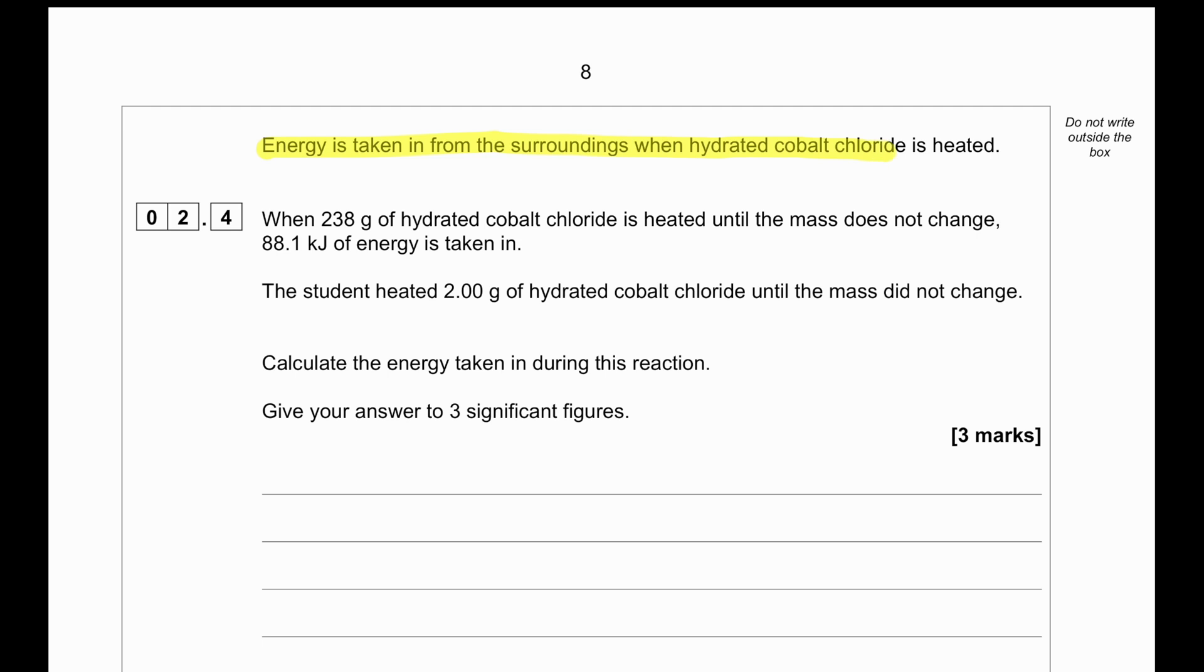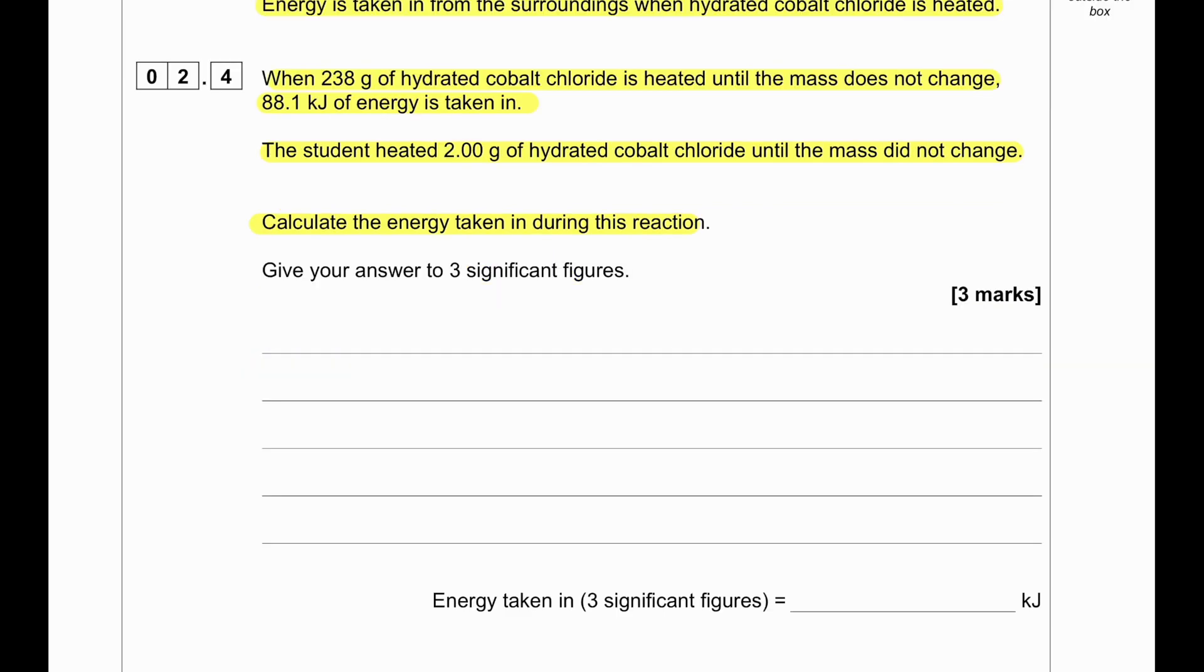Energy is taken in from the surroundings when hydrated cobalt chloride is heated. When 238 grams of hydrated cobalt chloride is heated until the mass does not change, 88.1 kilojoules of energy is taken in. The student heated 2 grams of hydrated cobalt chloride until the mass did not change. Calculate the energy taken in during this reaction. In order to calculate it, we will find the energy for 2 grams. Energy equals 2 divided by 238 times 88.1, which equals 0.740336 kilojoules. If we round it to the significant figures it becomes 0.740.